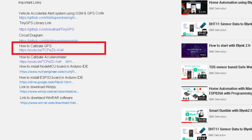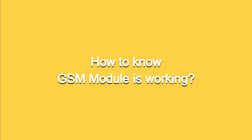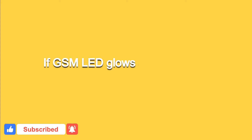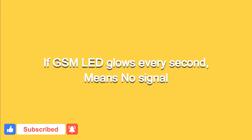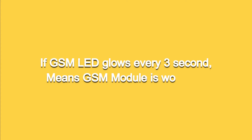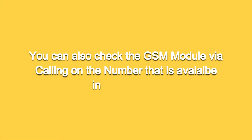For the GSM module: if the LED is glowing every second then there is no signal in the module. If the GSM LED starts glowing every three seconds that means the GSM module is working. You can also check the module by calling the number available in the GSM module. I am using a Vodafone Idea SIM card on the GSM module.